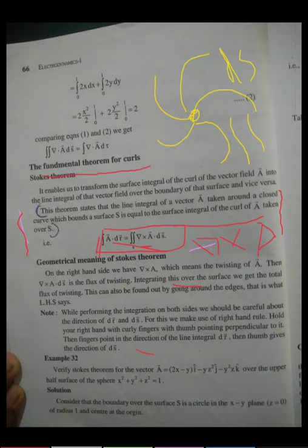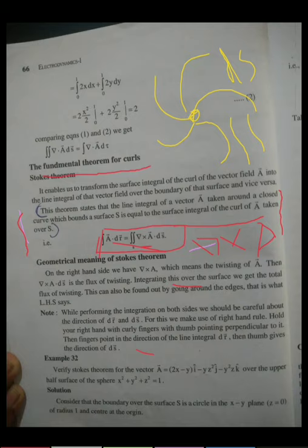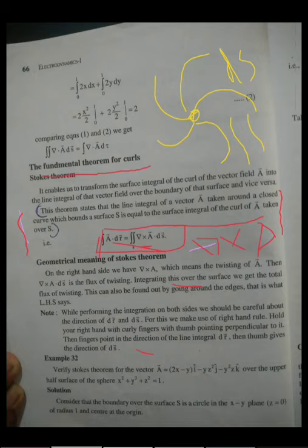This is equal to the line integral along the boundary. On the right-hand side we have del cross A, which means the curl of A, and del cross A dot dS is the flux of the curl. Integrating these over the surface, we get the total flux of the curl. When we integrate over the total surface we have the curl and the twisting, and this is equal to what can also be found by going around the edges — that is what the left-hand side says.